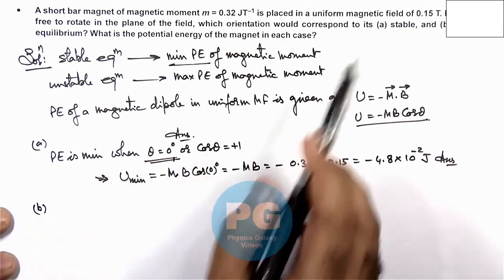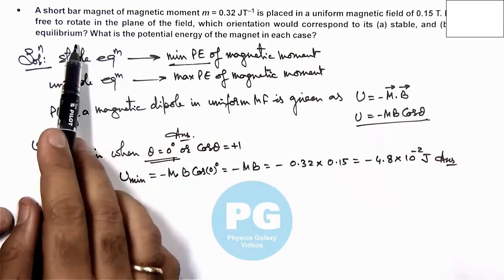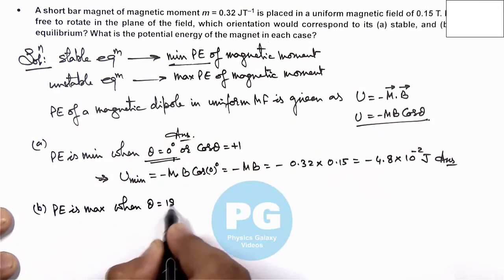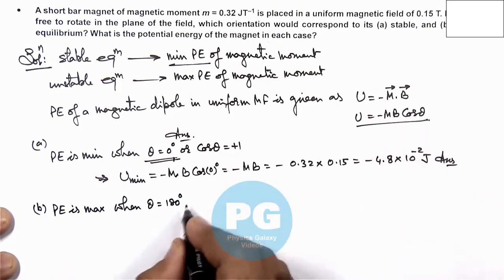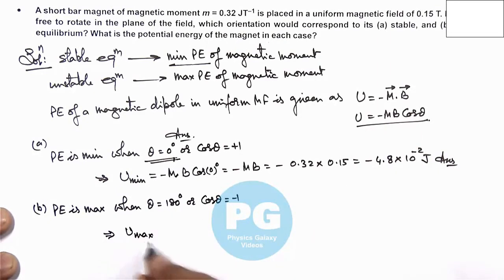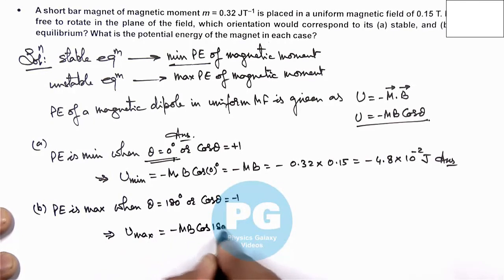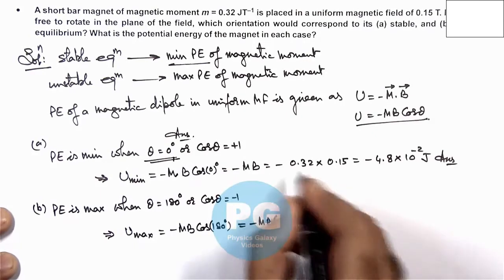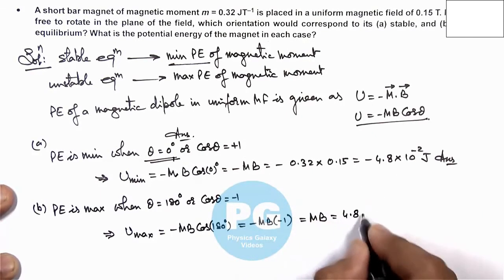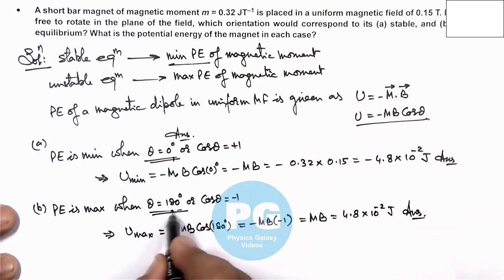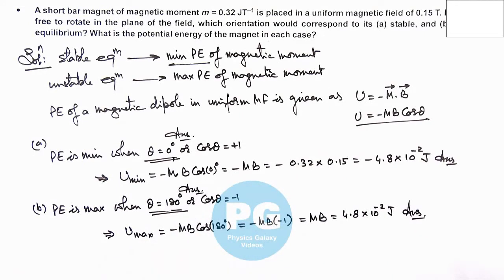For unstable equilibrium, the orientation and energy corresponds to maximum potential energy when theta equals 180 degrees. Because cos(180°) equals minus one, the potential energy minus m·B·cos(180°) equals minus m·B times minus one equals plus m·B equals 4.8×10⁻² joule. For unstable equilibrium the orientation is 180 degrees — the magnetic dipole is placed opposite to the direction of the magnetic field.